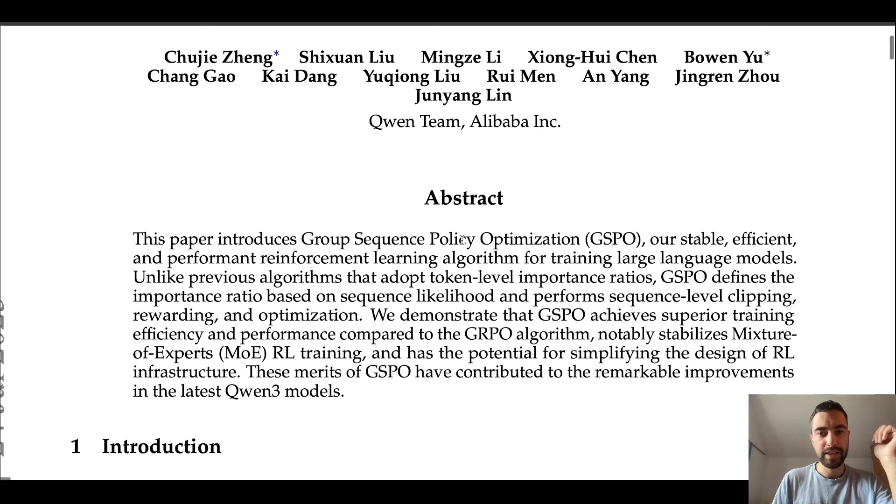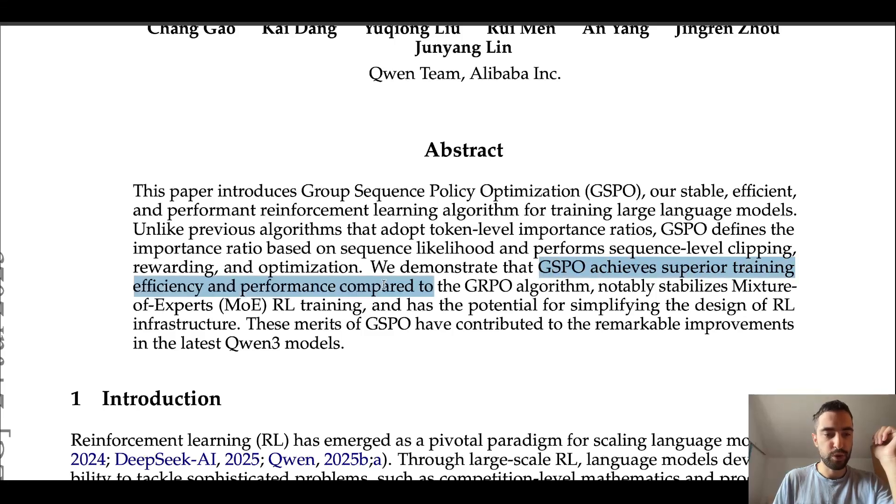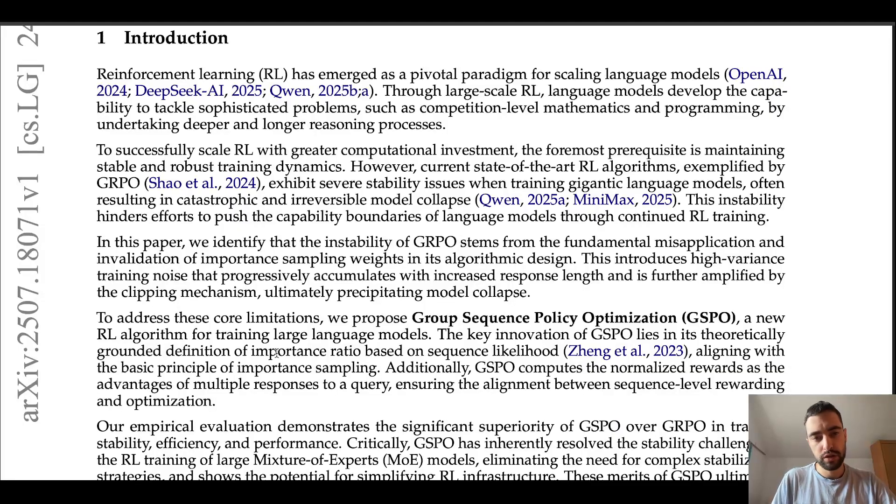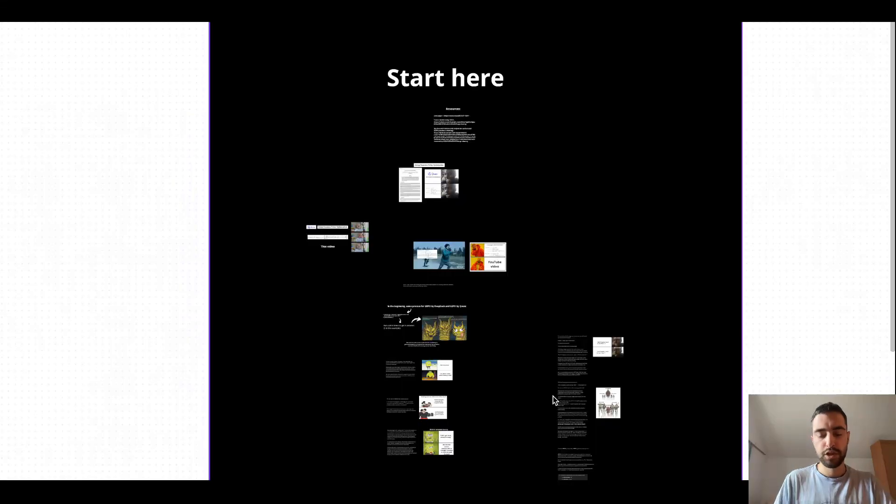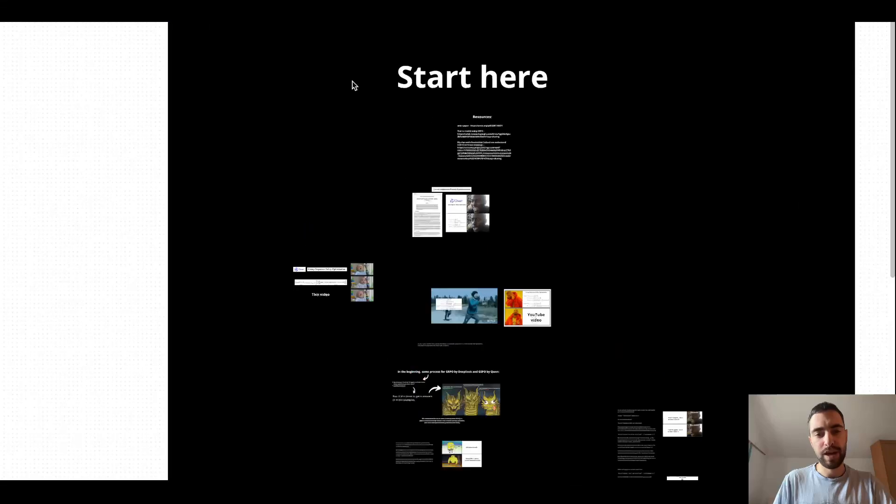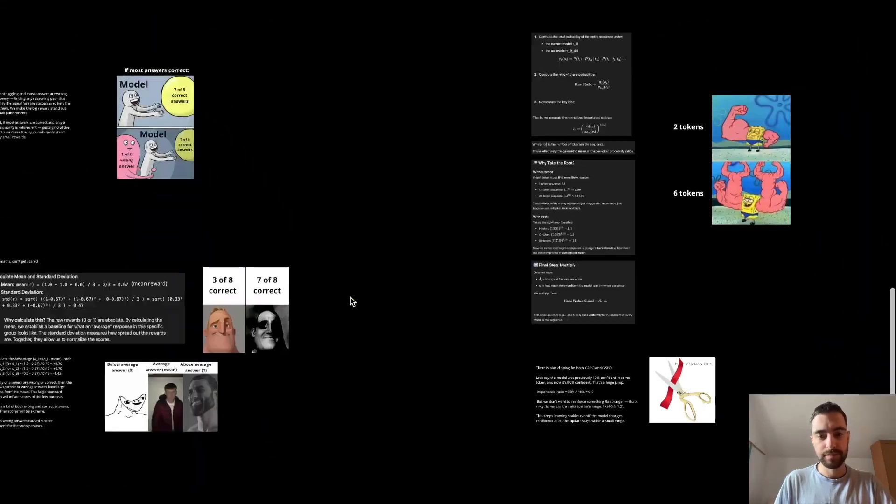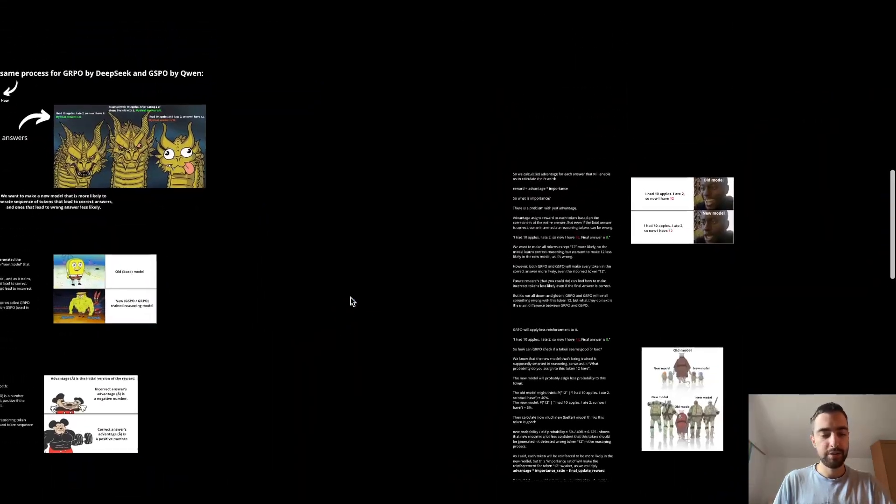So Quentim says that GSPO achieves superior training efficiency and performance compared to GRPO algorithm, notably stabilizes mixture of experts, reinforcement learning training, and has the potential for simplifying the design of reinforcement learning infrastructure. So it also solves some train collapsing problem with GRPO. So you can find the URL to my panel below the video where you can find all of the text as well. Thank you for watching and see you next time.